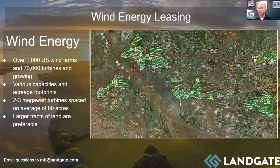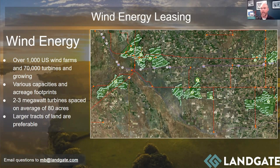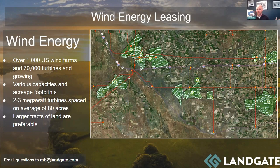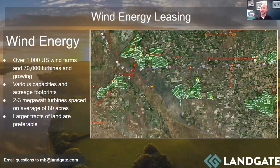There are over 1,000 different individual wind farms in the United States with over 70,000 active turbines, and that number is increasing rapidly. Depending on the vintage of the turbines, earlier farms had smaller turbines generating one to one-and-a-half megawatts. Newer turbines are much larger, generating on average two to three megawatts. As far as spacing, about one large turbine takes up roughly 80 acres spatially — not the actual footprint of the tower, which is only maybe an acre or two, but that's how tightly they space them.